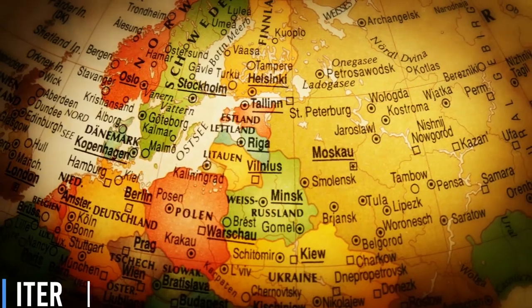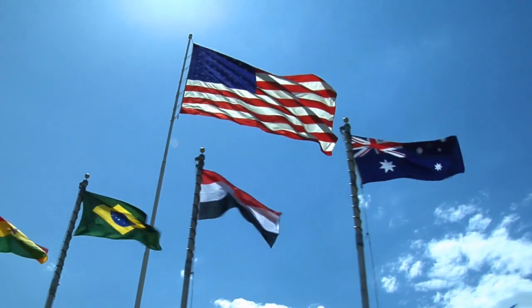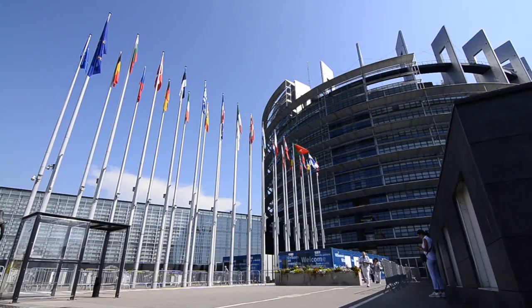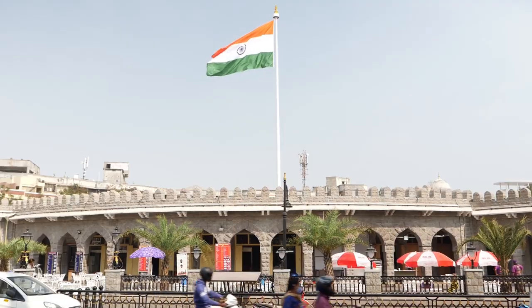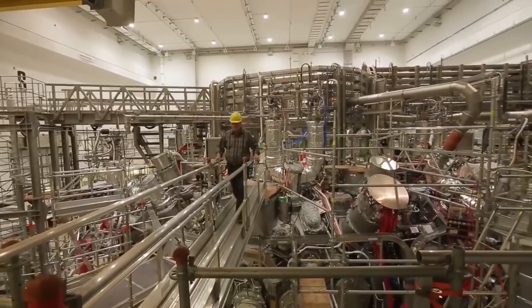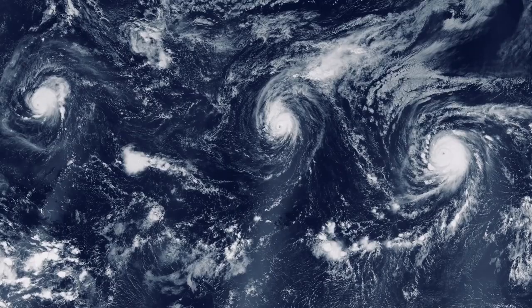ITER. Initiated in 1985, 35 countries signed to collaborate on one of the world's most important science projects. The European Union, United States, China, Russia, and India are among the stakeholders who are bound to receive the experimental data and the intellectual property of ITER in hopes of investing in renewable energy and fulfilling their treaties on climate change.